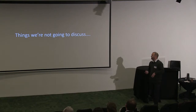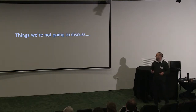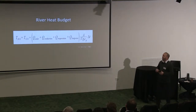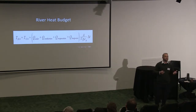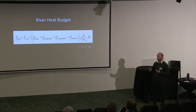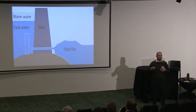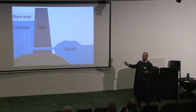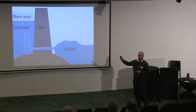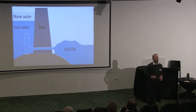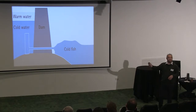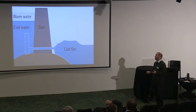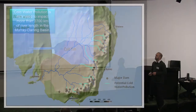Before I get to mitigation, I'm going to briefly cover the things we're not going to discuss — things like a river heat budget. This equation tells you how cold water pollution manifests itself. Or you can take the much simpler version: if you have a dam, you'll get warm water at the top, cold water at the bottom, and when you release that water, you will get cold fish. It's a pretty simple and basic process.